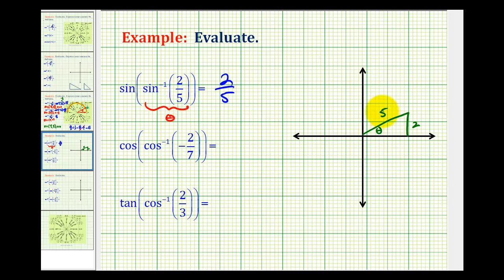So here's our angle theta, and then the outer function is asking us what is the sine of theta? Well, of course, the sine of theta is two-fifths.